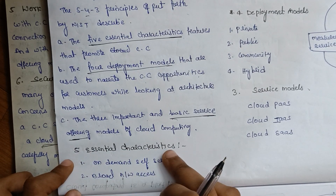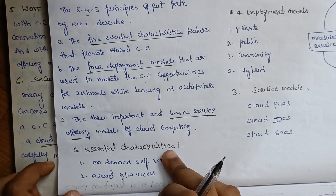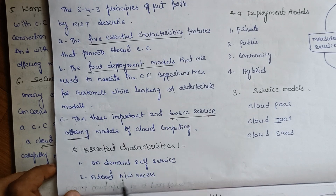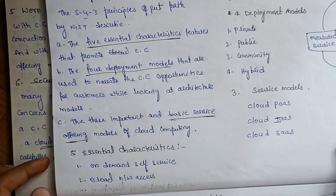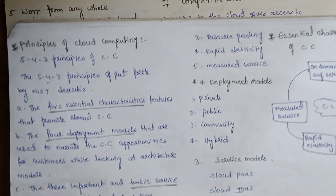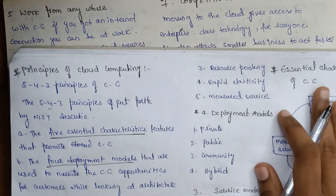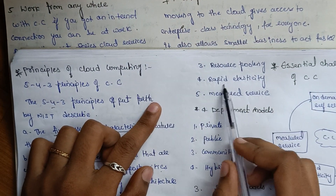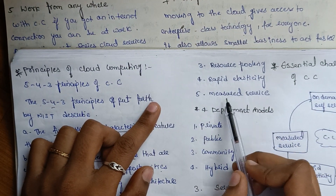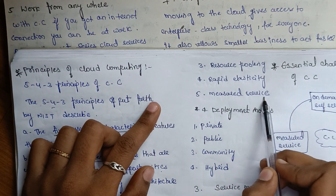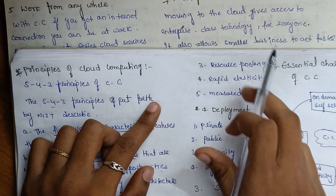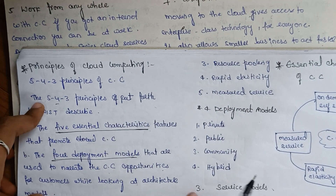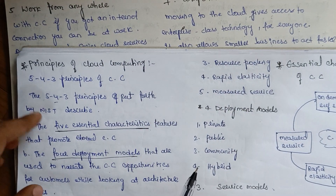The 5 essential characteristics are: on-demand self-service, broad network access, resource pooling, rapid elasticity, and measured services. These are the 5 essential characteristics of cloud computing principles.